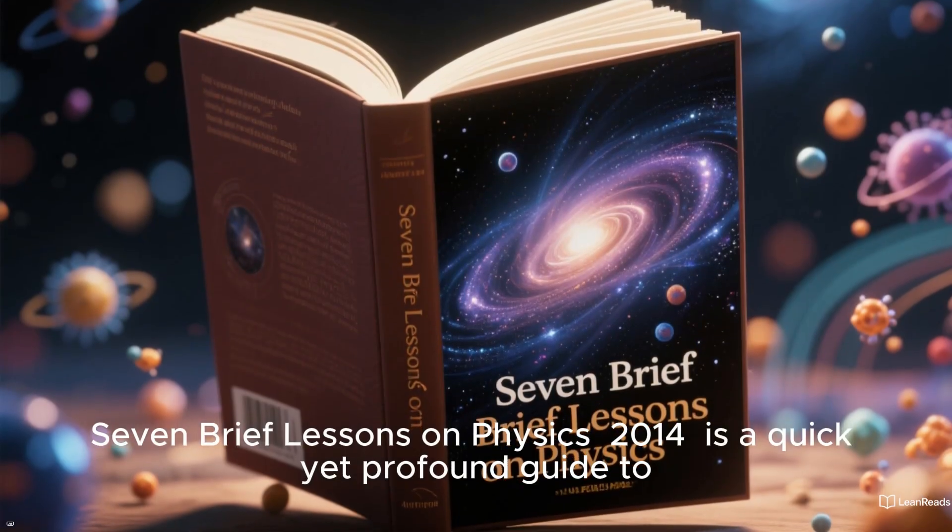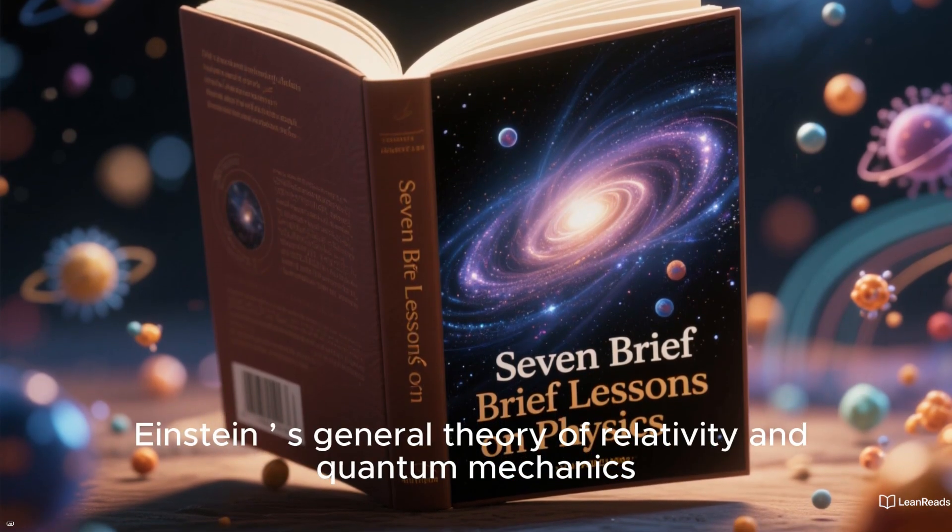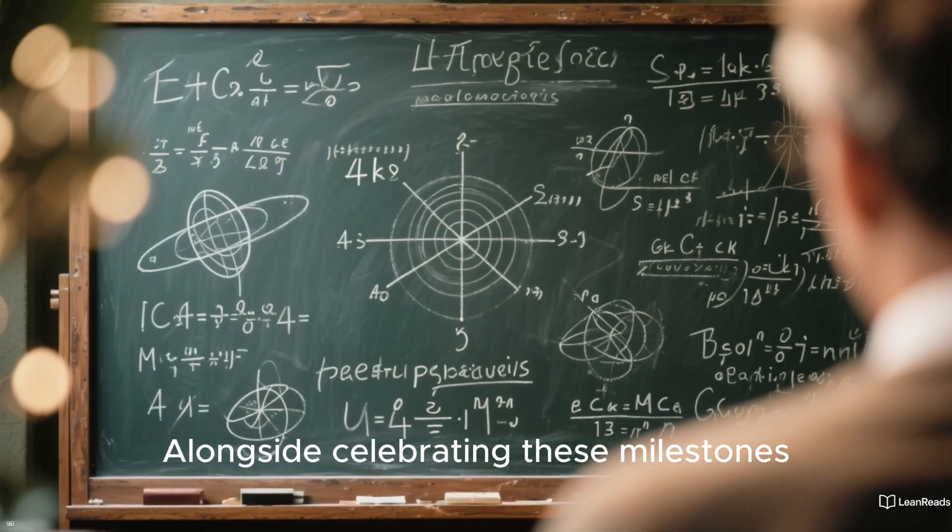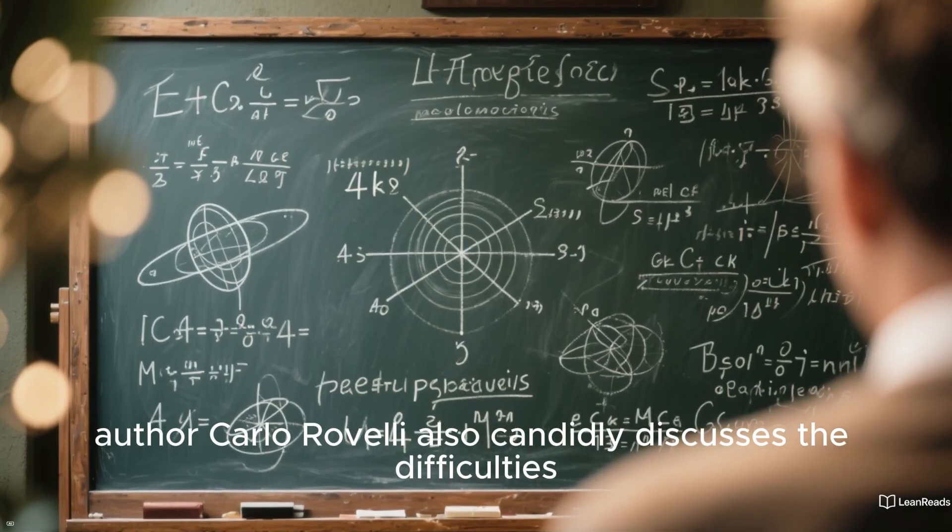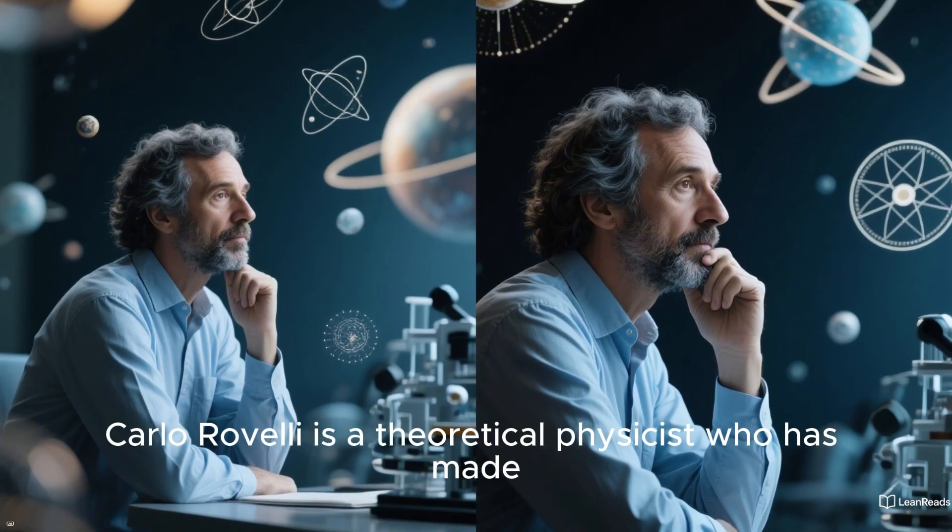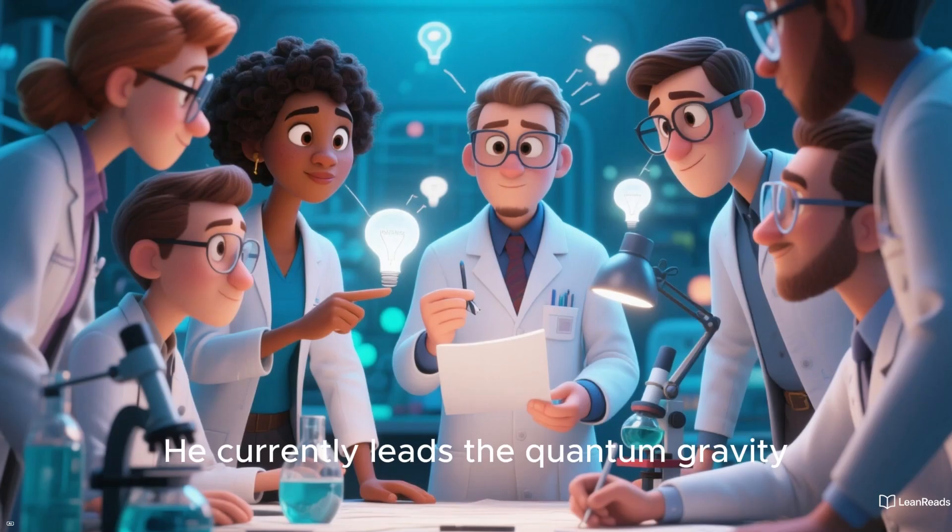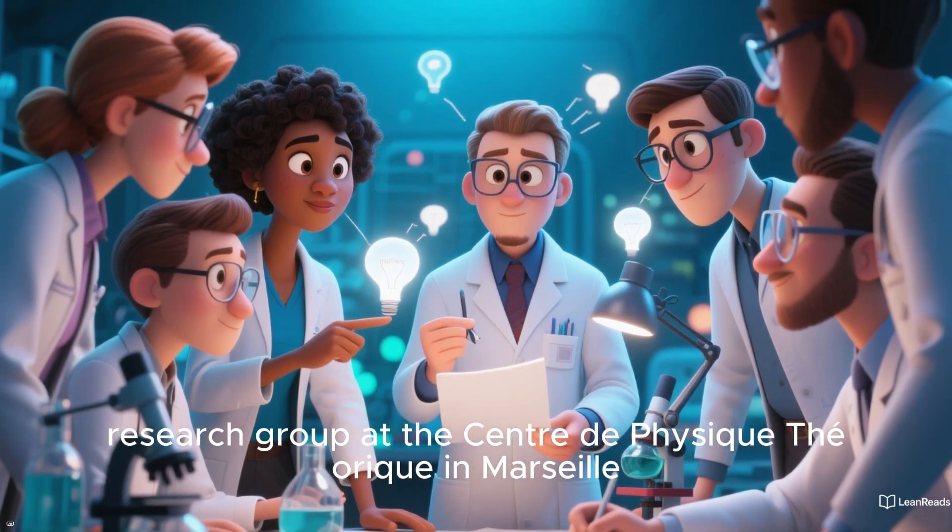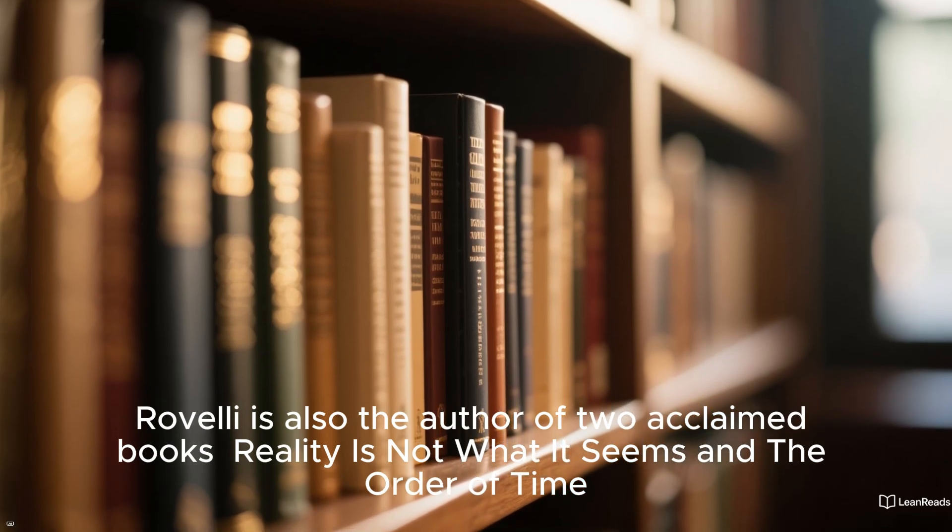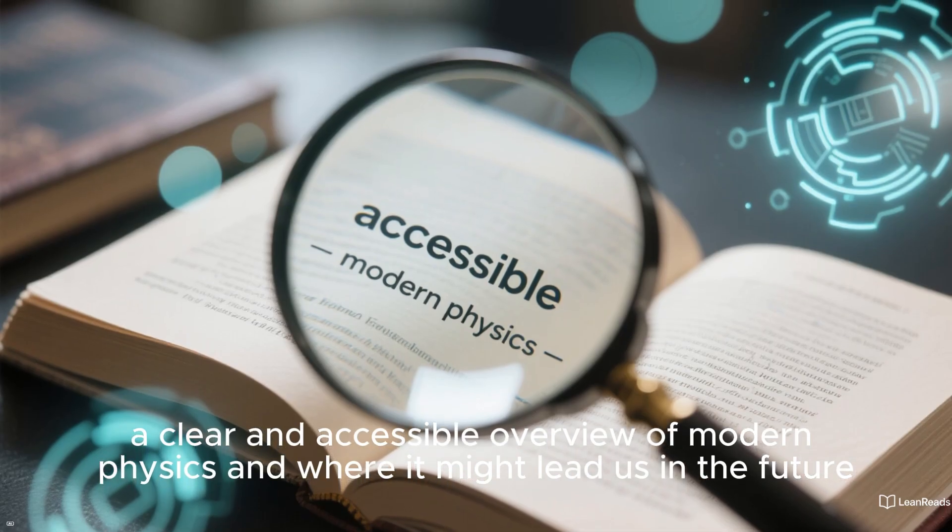Seven Brief Lessons on Physics is a quick yet profound guide to how we arrived at two of the greatest achievements of modern physics: Einstein's General Theory of Relativity and Quantum Mechanics. Alongside celebrating these milestones, author Carlo Rovelli also candidly discusses the difficulties and paradoxes that remain unresolved, and how science continues to strive for answers. Carlo Rovelli is a theoretical physicist who currently leads the quantum gravity research group at the Centre de Physique in Marseille, France. With this book, Rovelli offers readers a clear and accessible overview of modern physics and where it might lead us in the future.